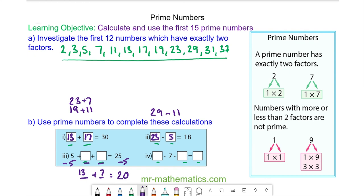And for question four, we could have 17 take away 7 which is 10, 10 take away 5 makes 5. There are lots of other possible solutions to question four.